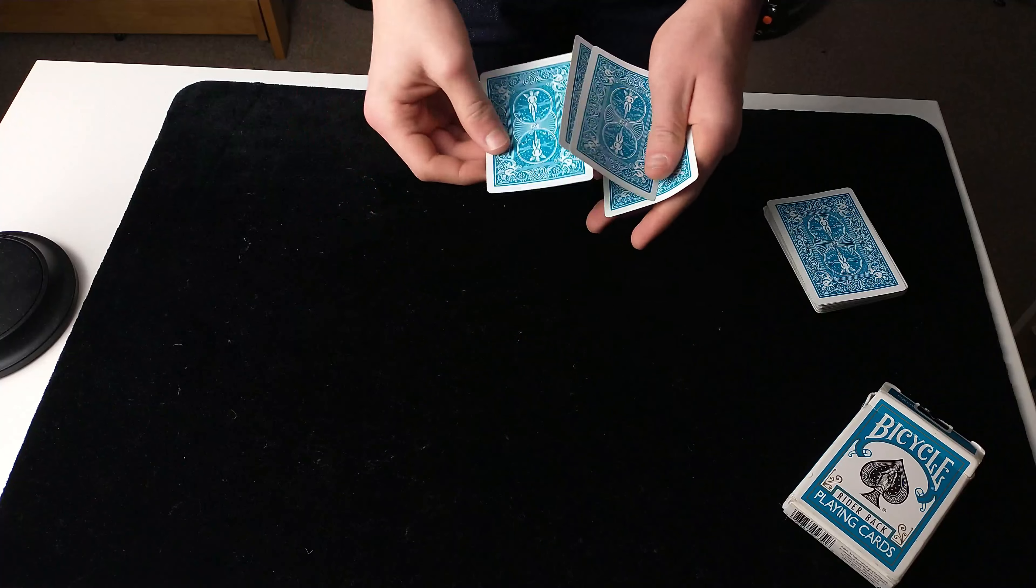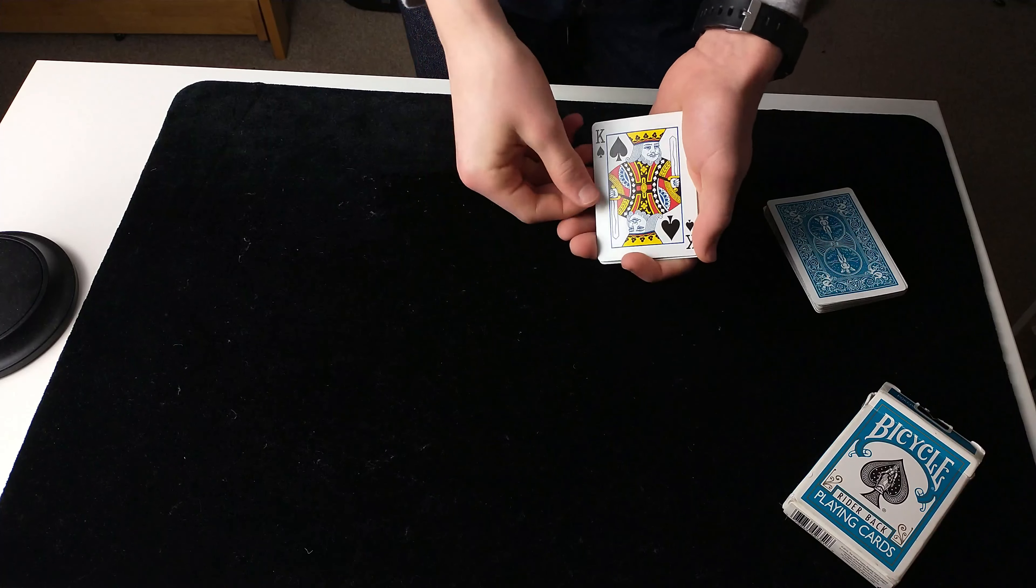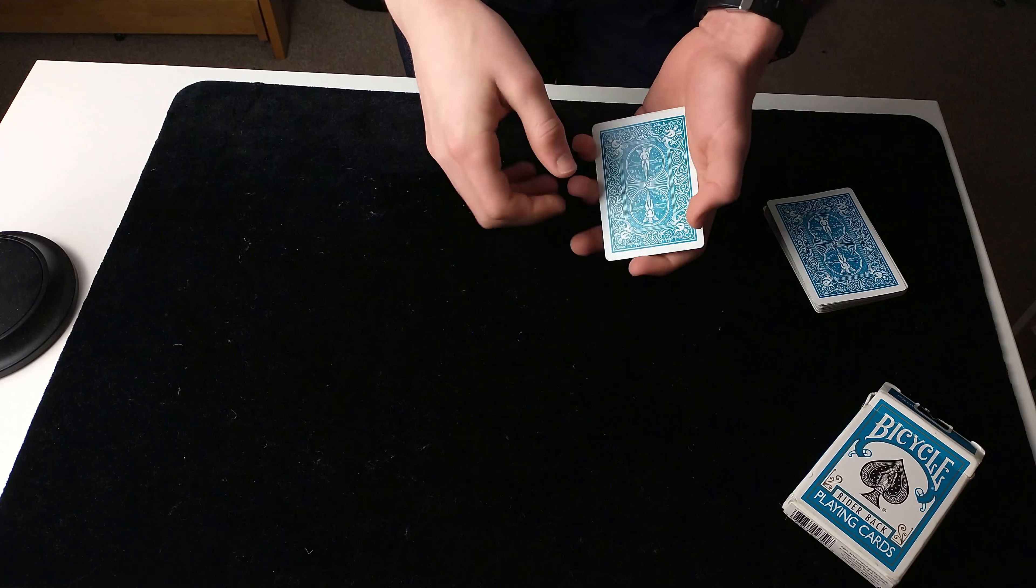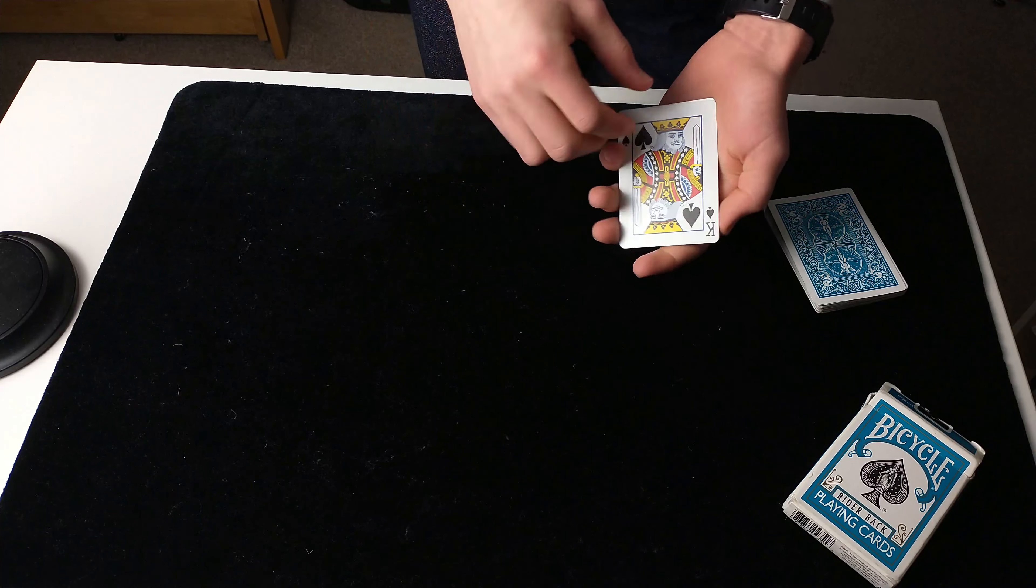Take the king, we can place it just in the middle there. Boom, it jumps straight back to the top. That's pretty magic, but watch when we place it in second. Boom, it jumps straight back to the top.